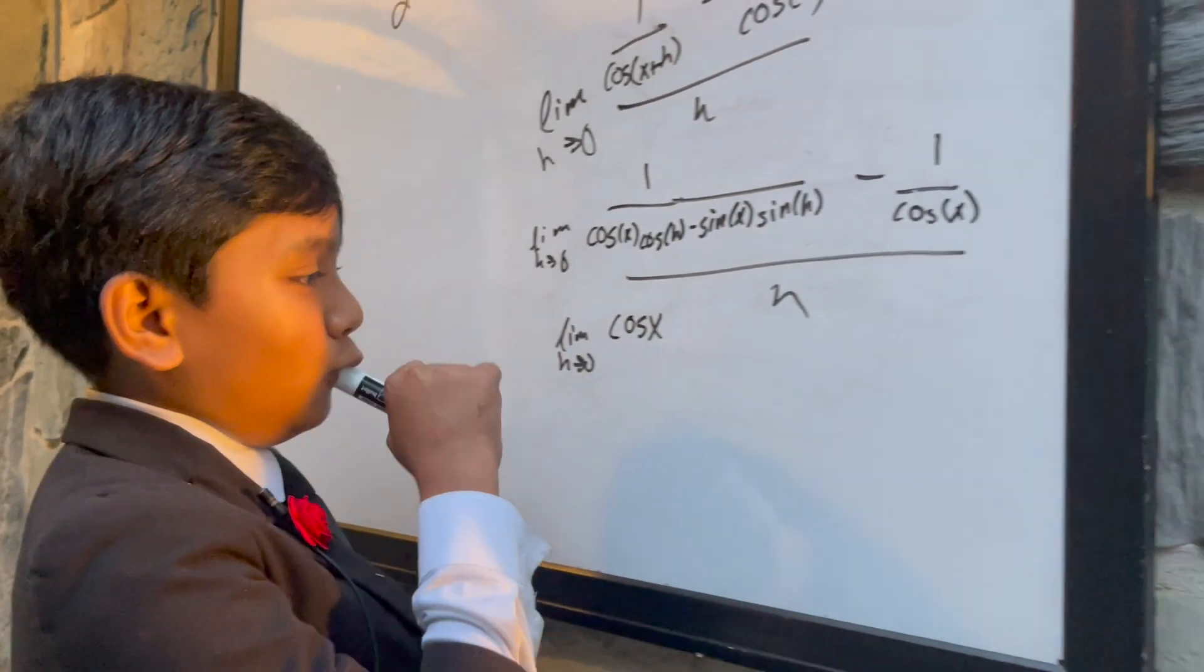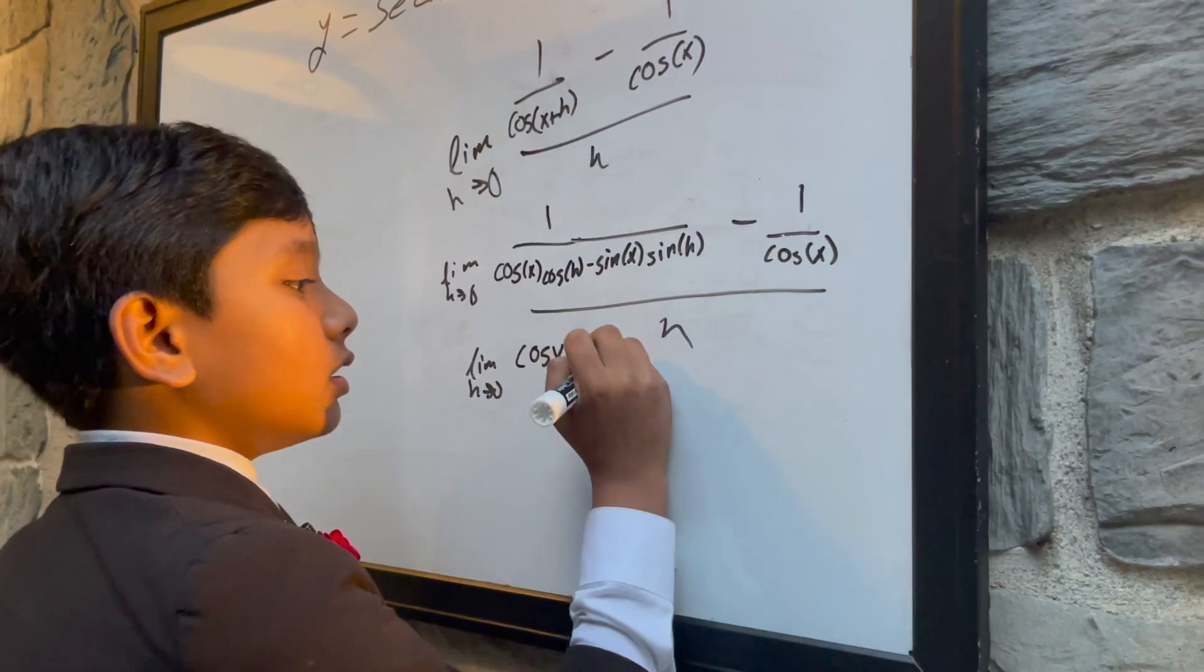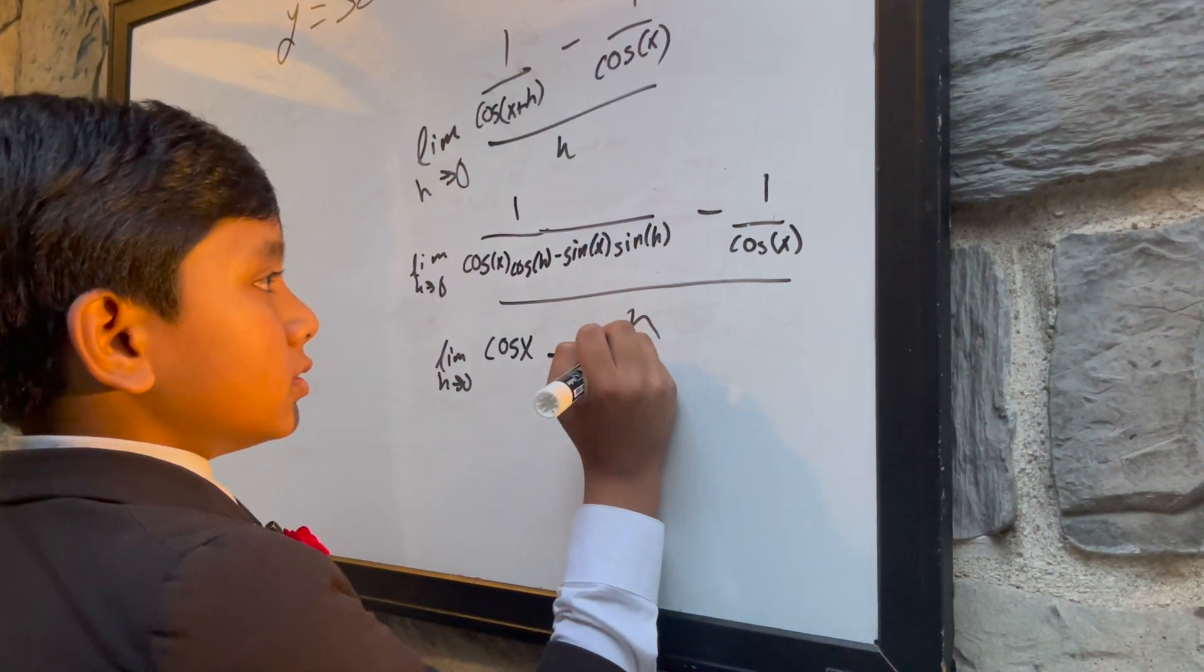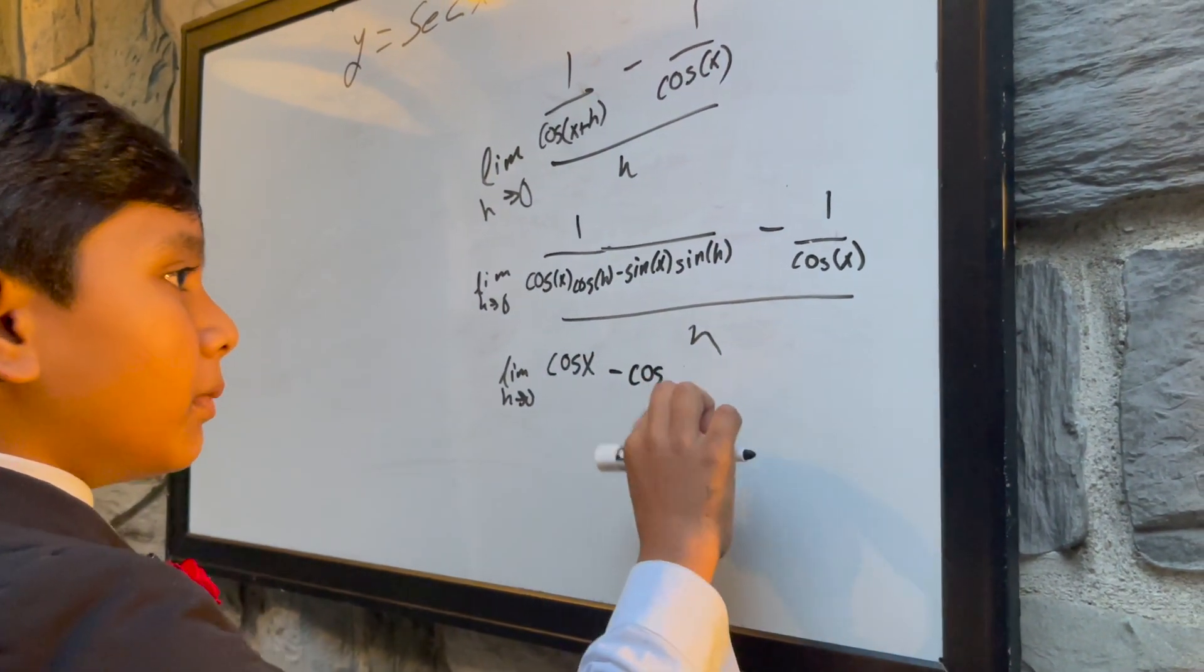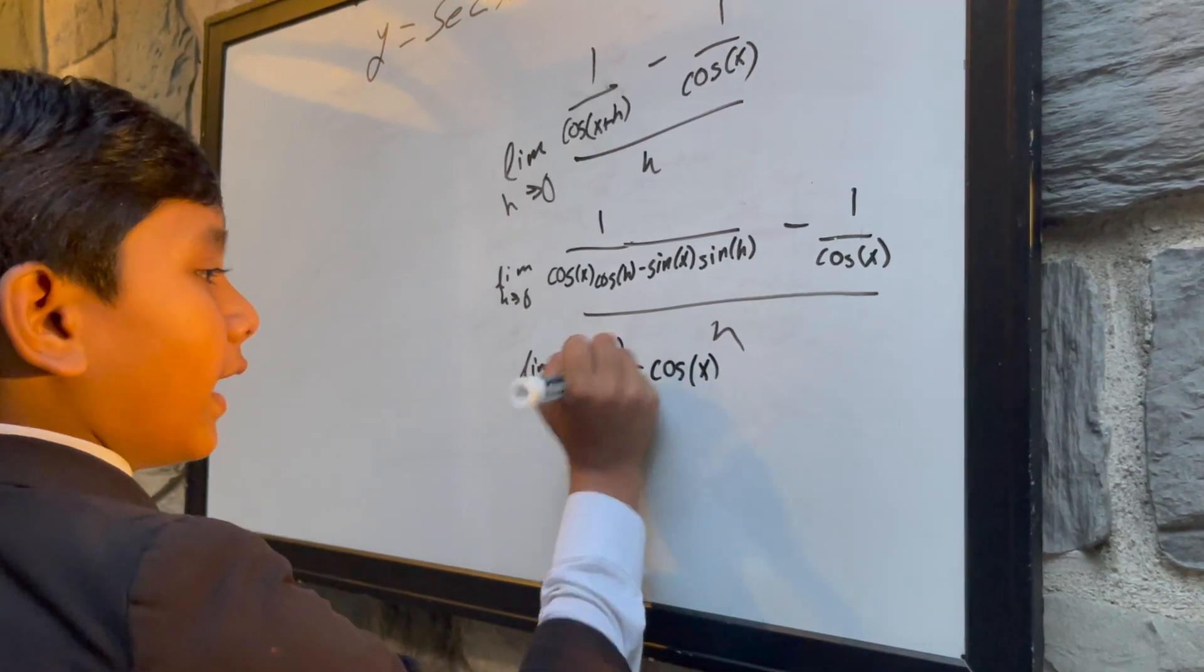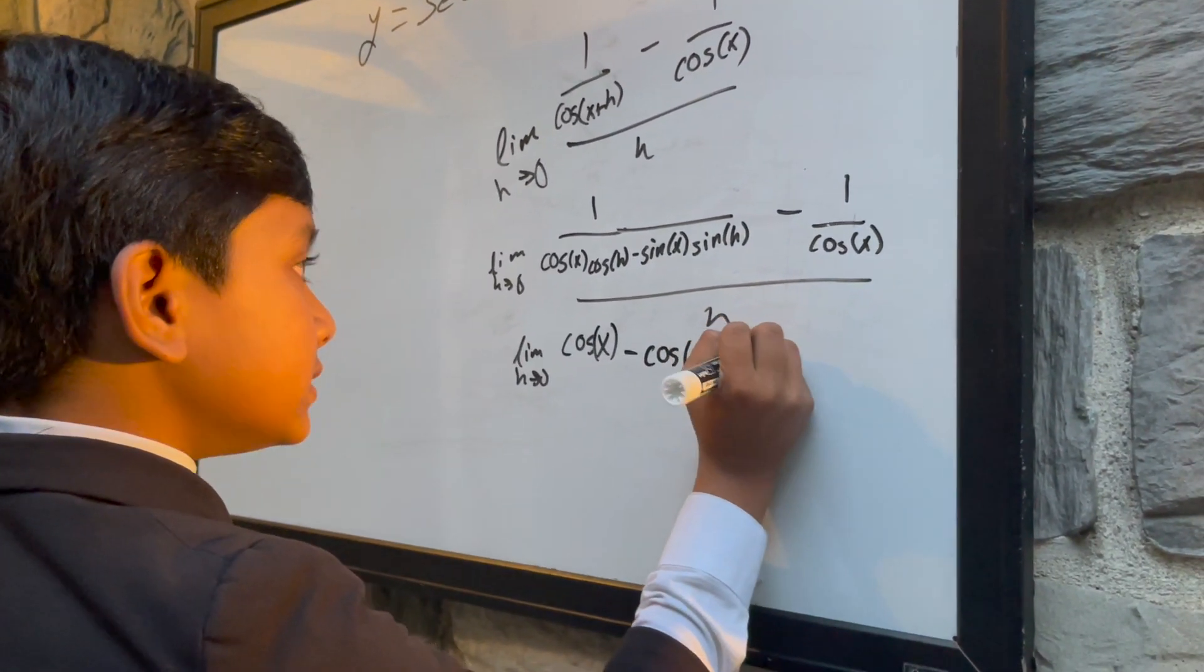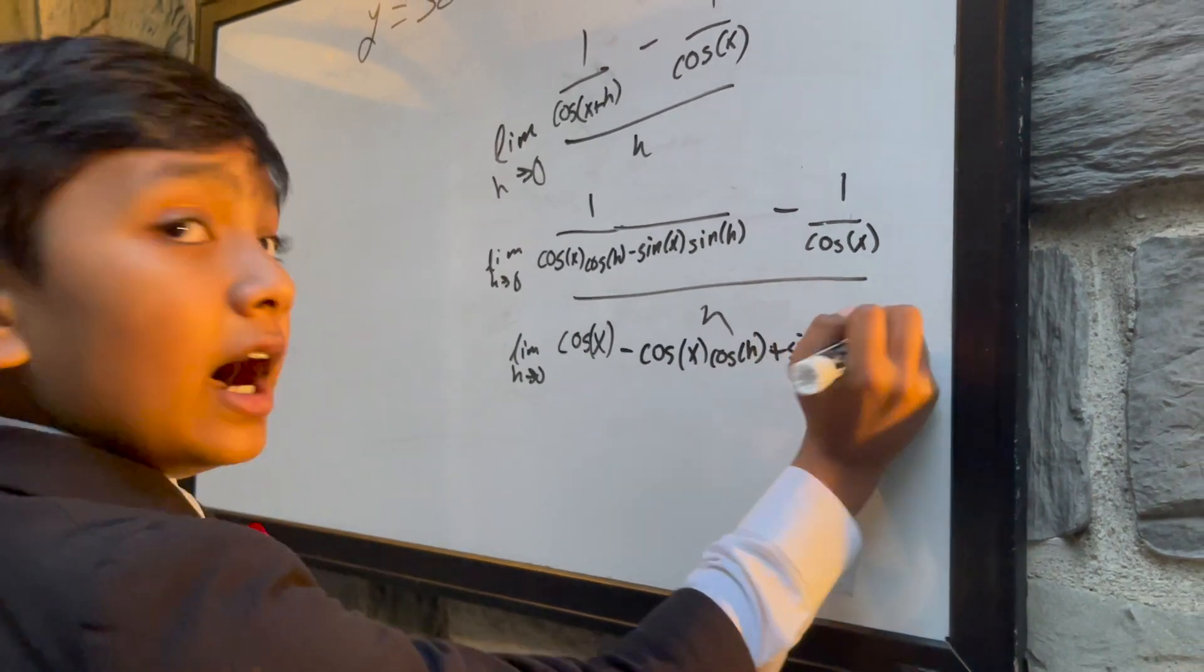So, you get cosine x minus cosine of x cosine of h plus sine of x sine of h.